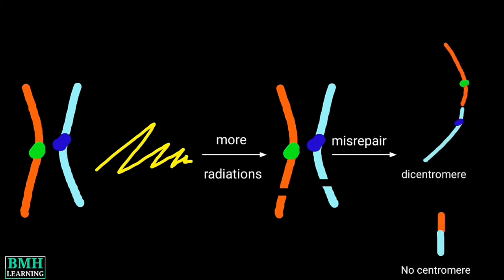During such periods, there is a chance for misrepair, when the broken end of one chromosome may join with a broken end of another, resulting in the formation of a Dicentric chromosome. A Dicentric chromosome is one that contains two centromeres instead of the one normally present. The formation of a Dicentric chromosome is highly specific to ionizing radiation, and its frequency serves as a measure of radiation exposure received by a person.